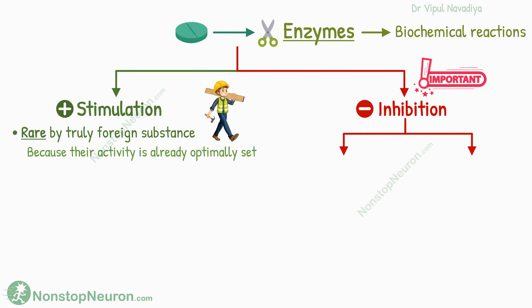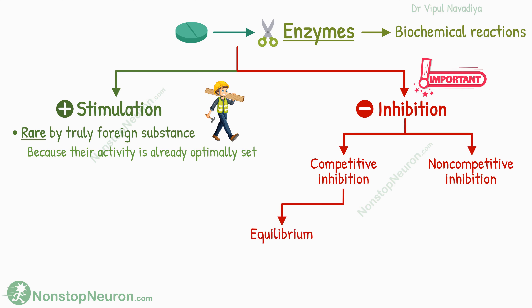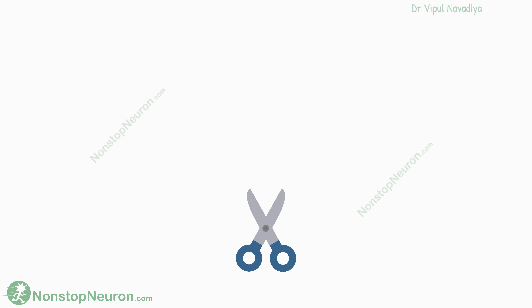Broadly, there are two types of inhibition: competitive inhibition and non-competitive inhibition. Competitive inhibition can be further divided into equilibrium type and non-equilibrium type. To understand these types better, let's quickly revise some basics of enzyme kinetics.